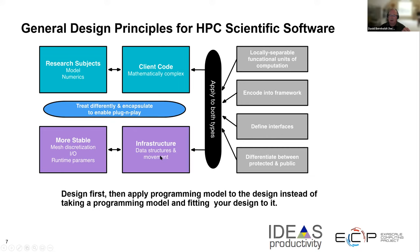A lot of your data structures and data movement patterns can be pretty well defined and implemented without needing to change often. Separate your code this way and apply these concepts: separate concerns so code is well-separated functionally, encode the more stable infrastructure components into a framework, define the interfaces carefully and document them well, and differentiate between what's private and what's exposed publicly. Expose to other pieces of code as little as you can get away with, so that users don't have to worry about how the code is implemented.